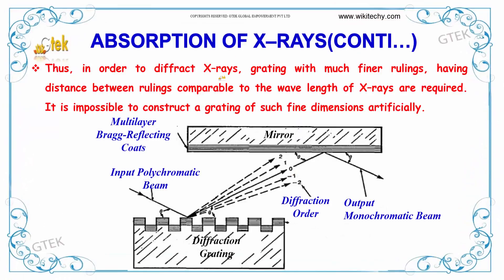In order to diffract X-rays, a grating with much finer rulings is needed — with distance between rulings comparable to the wavelength of X-rays. It is impossible to construct a grating of such fine dimensions artificially. This is a multi-layer black reflecting coax; you can see the diffraction grating with its rulings, and the input polychromatic beam comes out as diffraction orders.